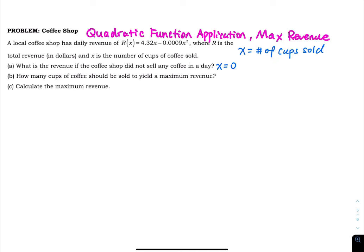That is easy. Then the revenue is zero. You have 4.32 times zero minus 0.0009 times zero squared. So basically this just equals zero. That would be zero dollars if you do nothing in one day, which makes sense.